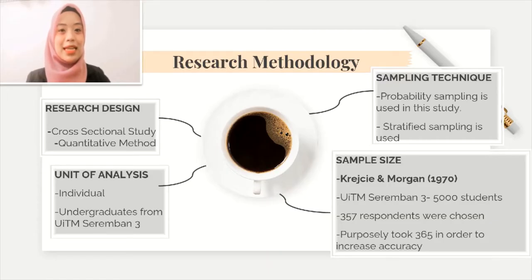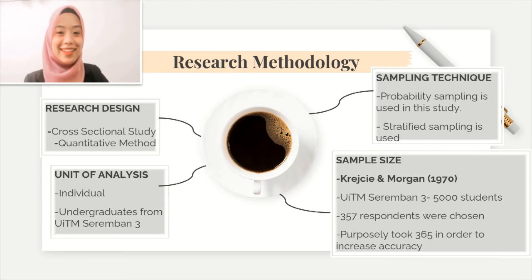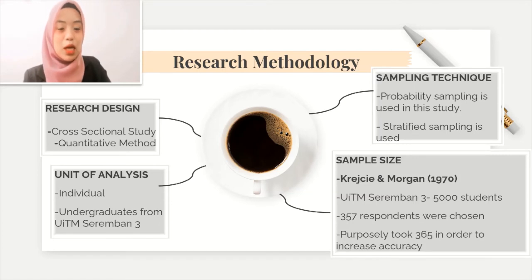In research methodology, I'll explain about a few elements. First, the research design: we use a cross-sectional study and quantitative method. As for the unit of analysis, we evaluate respondents individually among undergraduates from UITM Seremban 3. For the sampling technique, we chose probability sampling and used stratified sampling throughout our study. As for the sample size, we used the Krejcie and Morgan (1970) table, which required 357 respondents.